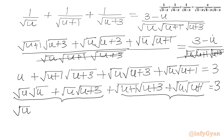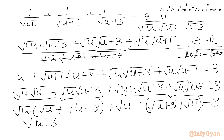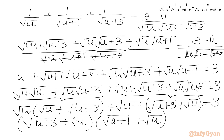So we get square root u common out: in the bracket square root u plus square root (u plus 3). Then we take square root (u plus 1) common out: in the bracket we write square root (u plus 3) plus square root u, equal to 3. Now we take (square root u plus square root (u plus 3)) overall common. So we get (square root (u plus 3) plus square root u) in one bracket, which is overall common, and then the other bracket is (square root (u plus 1) plus square root u) equal to 3.